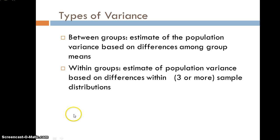If you imagine that your variance is like a pie that you could split into different groupings — we have a between-groups type of variance, which estimates the population variance based on the differences among the group means, and a within-groups variance, which estimates the population variance based on the differences within each sample distribution, within each group. We can split that pie into between-groups variance versus within-groups variance, which is due to individual differences within each group.